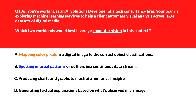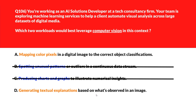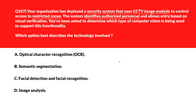Option C says creating textual explanations based on visualizing numerical data — this falls under data visualization, not image interpretation or analysis, so incorrect. Option D says generating textual explanations based on what's observed in an image, describing image contents — Computer Vision can generate natural language descriptions from image content using scene and object recognition. That is another correct answer, so we'll lock it. The two correct answers are A and D.